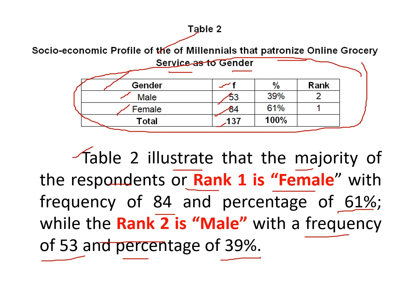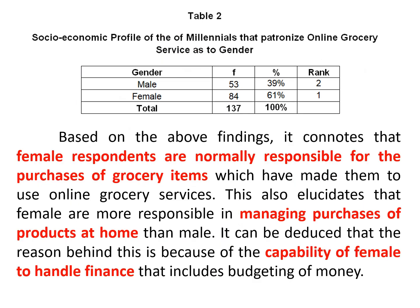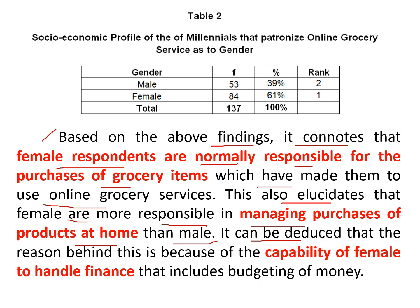The second paragraph focuses on analyzing and interpreting the table. For example: Based on the above findings, it connotes that female respondents are normally responsible for the purchases of grocery items, which has made them use online grocery services. This elucidates that females are more responsible in managing purchases of products at home than males. It can be deduced that this is because of the capability of females to handle finances, including budgeting of money.